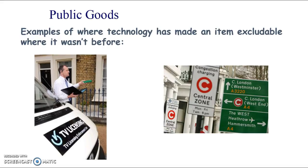The congestion charge in London is another example. One of the problems with charging people for road use is that you'd have to build lots of toll booths, which is expensive and difficult. Previously the technology hadn't been there, but now with GPS technology and licence plate recognition cameras we can have things like the London congestion charge.